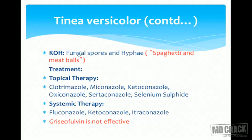Treatment with topical therapy includes clotrimazole, miconazole, ketoconazole, or newer agents such as oxyconazole, sertaconazole, or selenium sulfide. In cases of extensive Tinea versicolor or recurrence, patients can be put on oral fluconazole, ketoconazole, or itraconazole. One must remember that griseofulvin is not effective against Malassezia furfur and is therefore not indicated in Tinea versicolor.